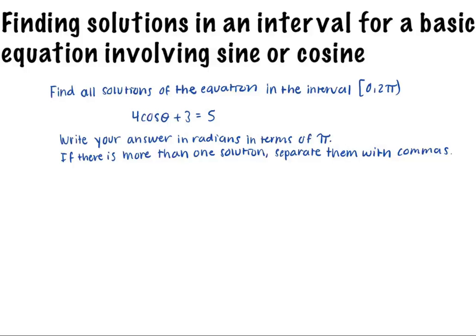To be able to solve this equation, we need to algebraically solve for cosine of θ. First, we can subtract 3 from both sides of the equation and write 4 cosine of θ equals 2.